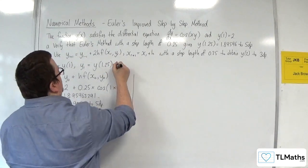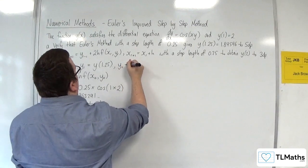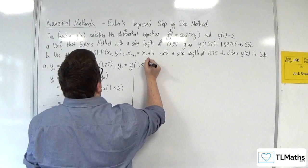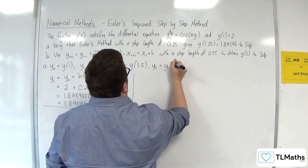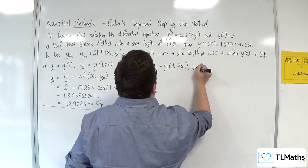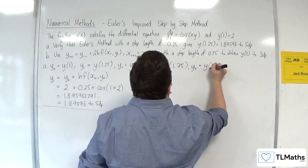So y2 will be y of 1.5, y3 will be y of 1.75, and y4, which is what we're going to want, is y of 2.